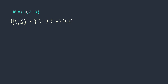Then 2 ≤ 1? No. 2 ≤ 2? Yes. 2 ≤ 3? Yes. How about 3? 3 < 1? No. 3 < 2? No. 3 ≤ 3? Yes, it's equal. So we formed a relation that is less than or equal to on this particular set.